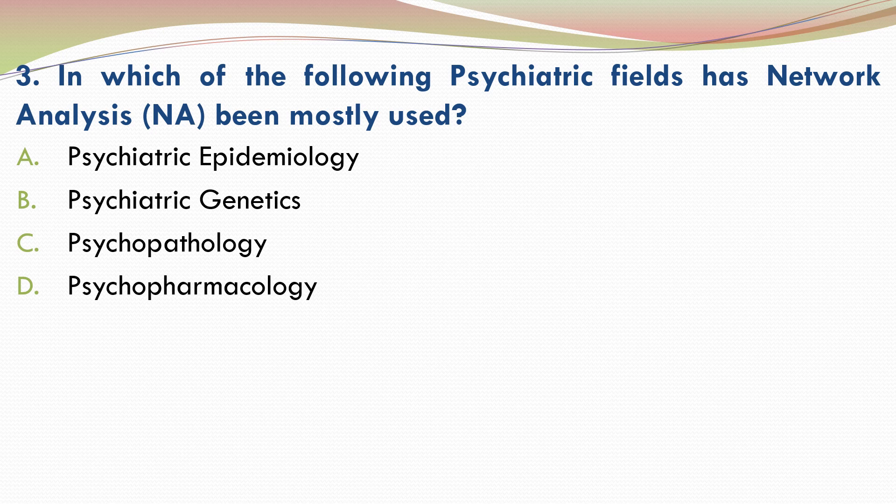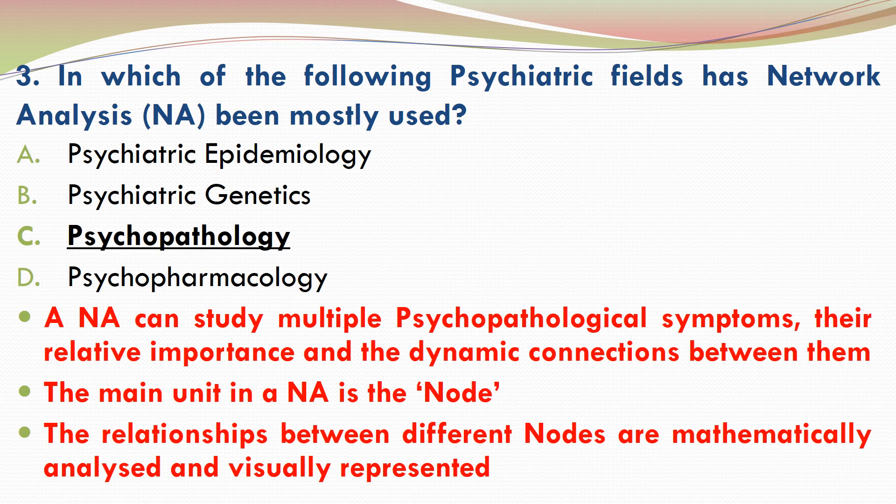Question 3. In which of the following psychiatric fields has network analysis been mostly used? Please go through the four options and make your selection. The correct answer is C. Psychopathology. Network analysis can study multiple psychopathological symptoms, their relative importance, and the dynamic connections between them. The main unit of study in a network analysis is called the node; the relationships between different nodes are mathematically analyzed and visually represented.